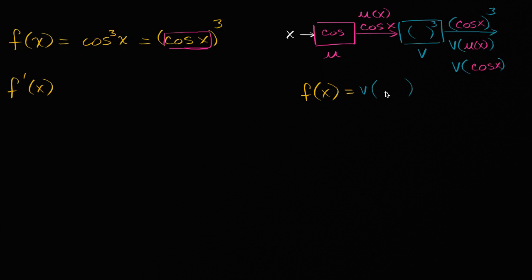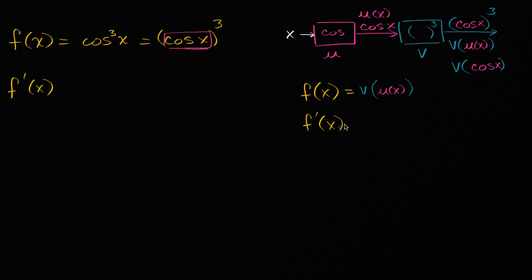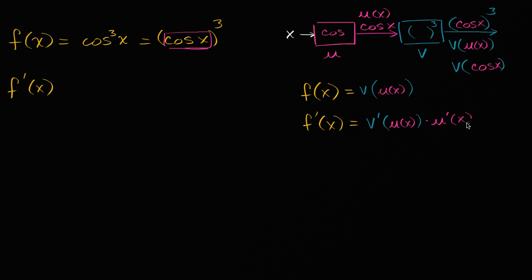I'm saying it in slightly different ways because the first time you learn this, it can be a little hard to deeply understand. The chain rule tells us that if you have a situation like this, then the derivative f prime of x is going to be the derivative of the whole thing with respect to u of x — written as v prime of u of x — times the derivative of u with respect to x, times u prime of x. This is one expression of the chain rule.